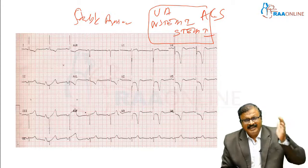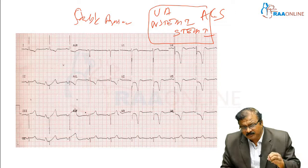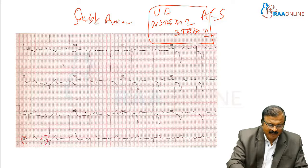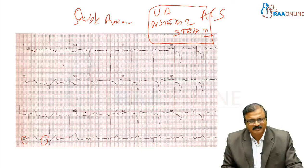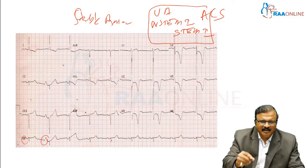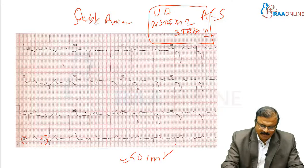When interpreting any ECG, always start as a beginner. Look at the rhythm first — check whether there are P waves, whether all P waves are followed by QRS complexes, and whether the RR interval is regular. Here, P is normal, QRS is normal duration, RR is regular, and the heart rate is approximately 60 per minute.